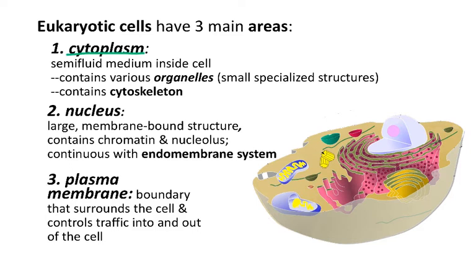The plasma membrane is the boundary that separates the water in the cytoplasm and the chemistry inside the cell from the water and the chemistry that occurs outside the cell. And it's primarily made of phospholipids. We'll talk a lot more about that next week.